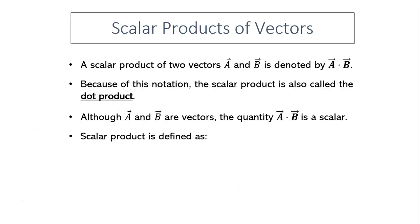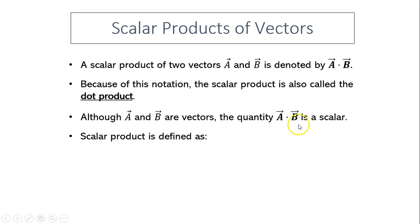The scalar product of two vectors A and B is denoted by A dot B. Because of this notation, the scalar product is also called the dot product. Although A and B are vectors, the product itself — the dot product — is a scalar quantity. That means it has no direction.